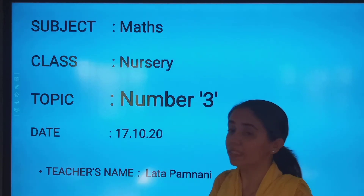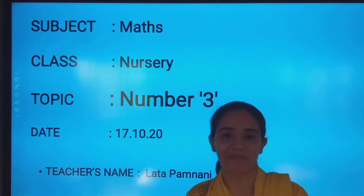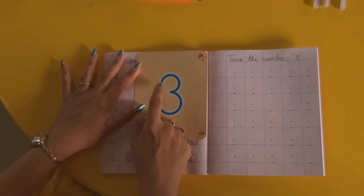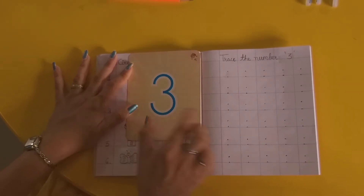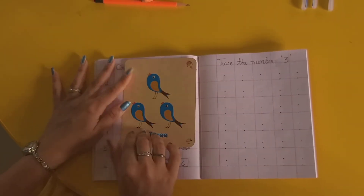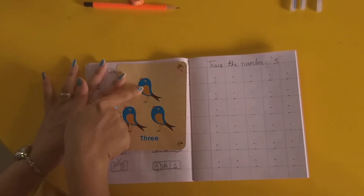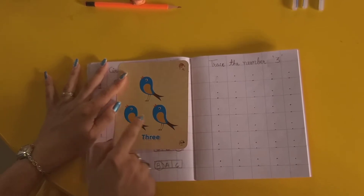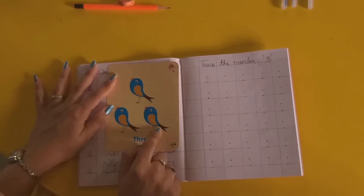Today we are going to learn number 3. Come, see — this is number 3. How many birds? 1, 2 and 3. Three birds!